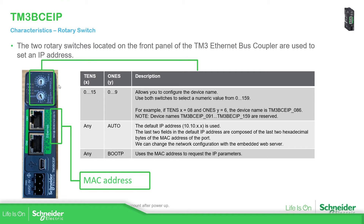For example, if the tens digit is 8 and the ones digit is 6, the device for DHCP will be set accordingly. If we use the auto mode, by default we have the IP address, and then if we access the web interface you should be able to change that. And if you select BOOTP, it allows you to make the BOOTP assignment by the MAC address of the device, which you can find on the unit.